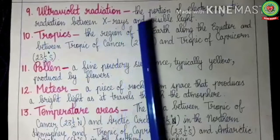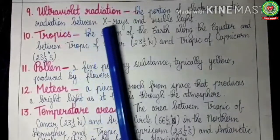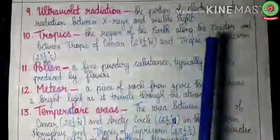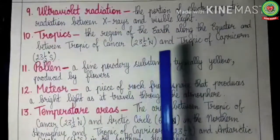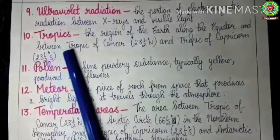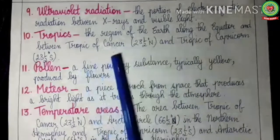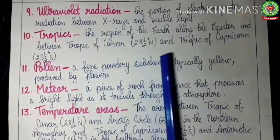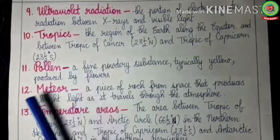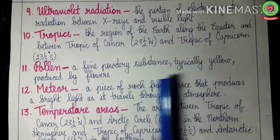Ultraviolet radiation: the portion of electromagnetic radiation between x-rays and visible light. The sun is the source of alpha rays, beta rays, gamma rays, x-rays, infrared rays, and even ultraviolet rays. Tropics: the region of the earth along the equator, between the Tropic of Cancer at 23.5 degrees north latitude and the Tropic of Capricorn at 23.5 degrees south latitude. Pollen: a fine powdery substance, typically yellow in color, produced by flowers.